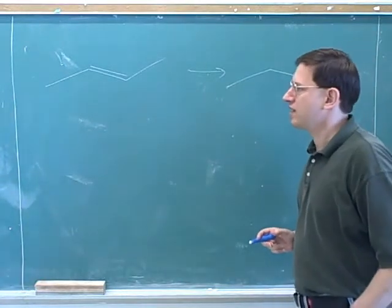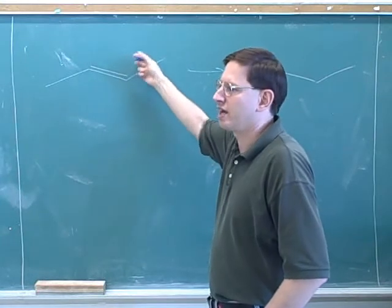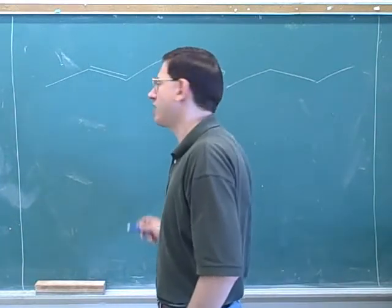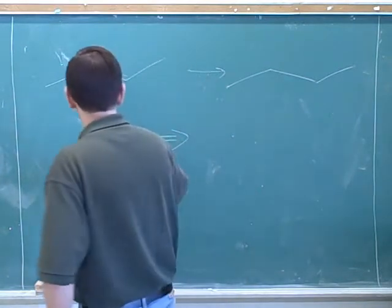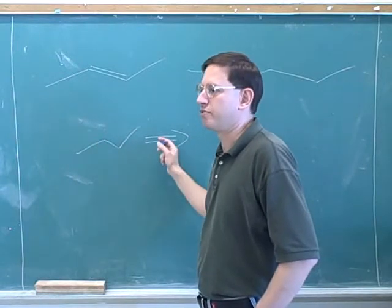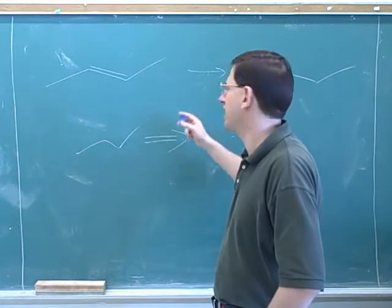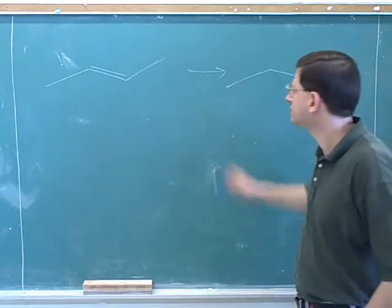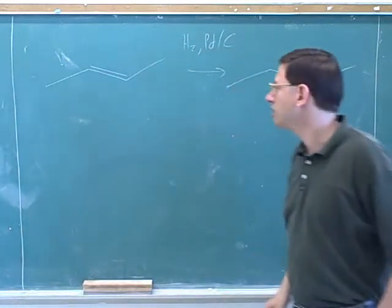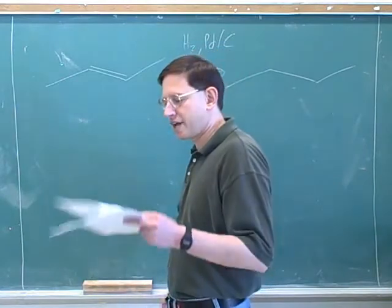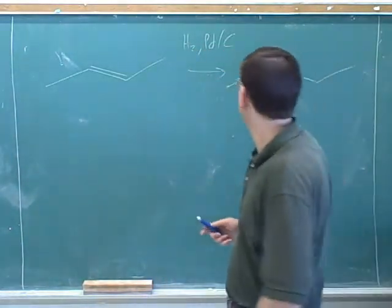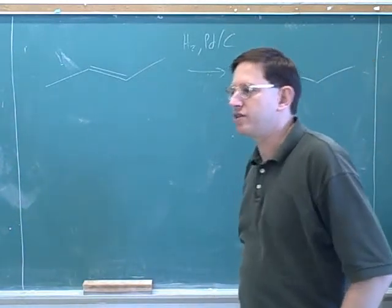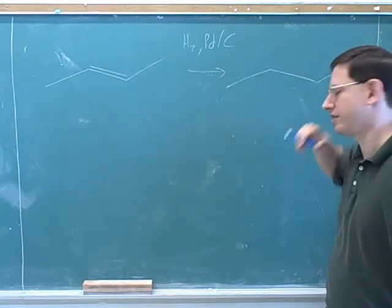On an exam, if this is a synthesis problem, the starting material is on the left and the product on the right. He might sometimes do retrosynthesis as a thought process, but on an exam the synthesis problem is set up like this. So if this is the starting material and this is the product, the answer is addition of H2 and some sort of metal catalyst. The point is: how do you know when to use this reaction? When you want to get rid of functional groups. We produced a molecule with no functional groups, and we know very few ways to do that. So if you notice a product with no or fewer functional groups, there's a good chance you're using hydrogenation.